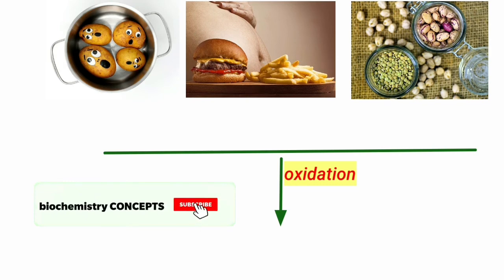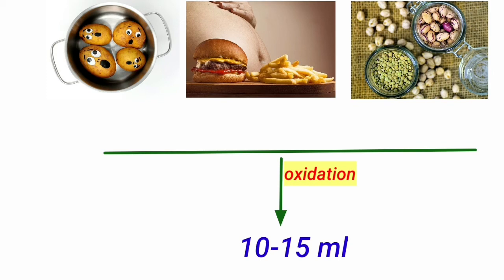Approximately 10 to 15 ml of water is produced per 100 calories of energy produced from the oxidation of foodstuffs.